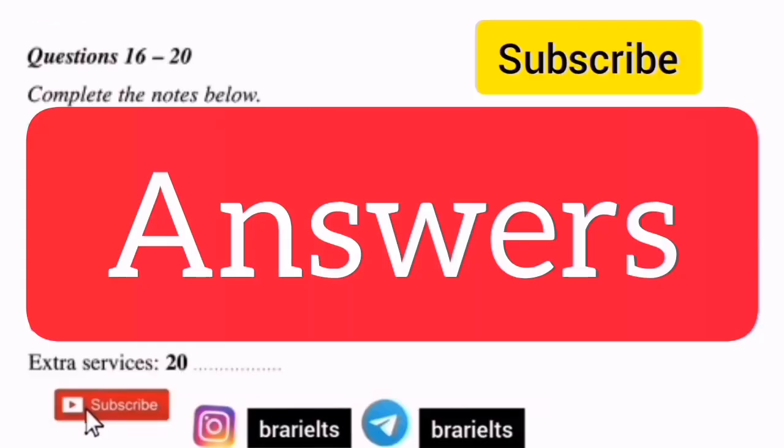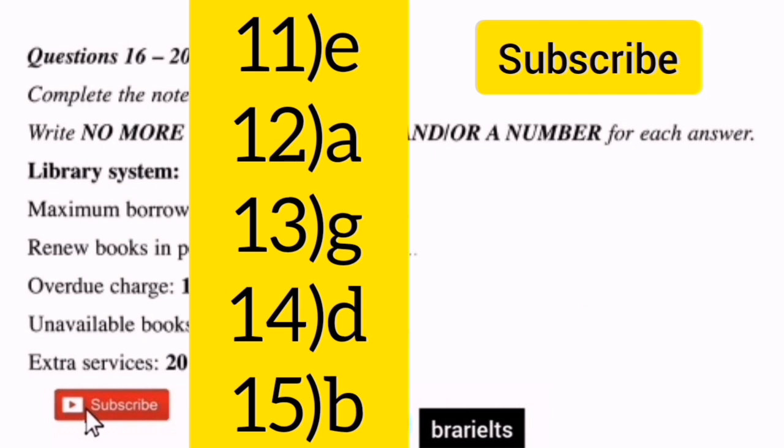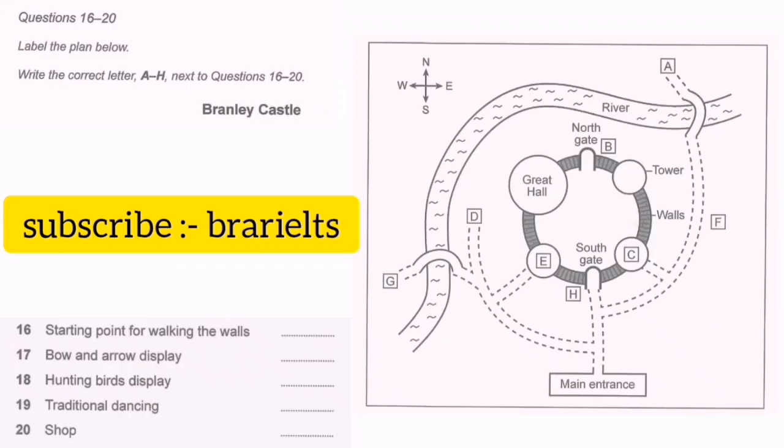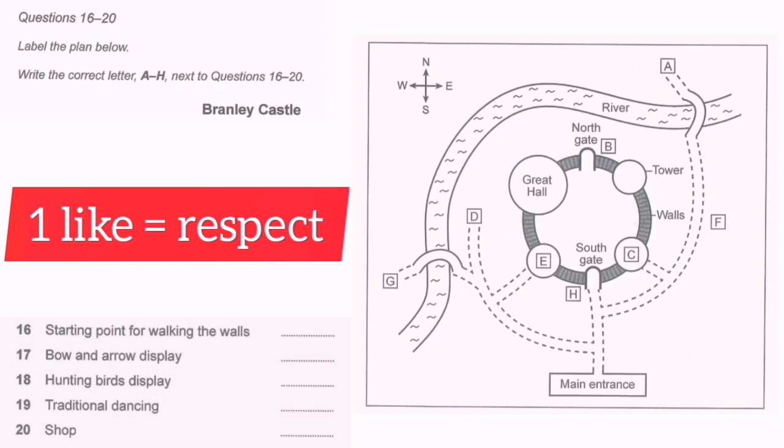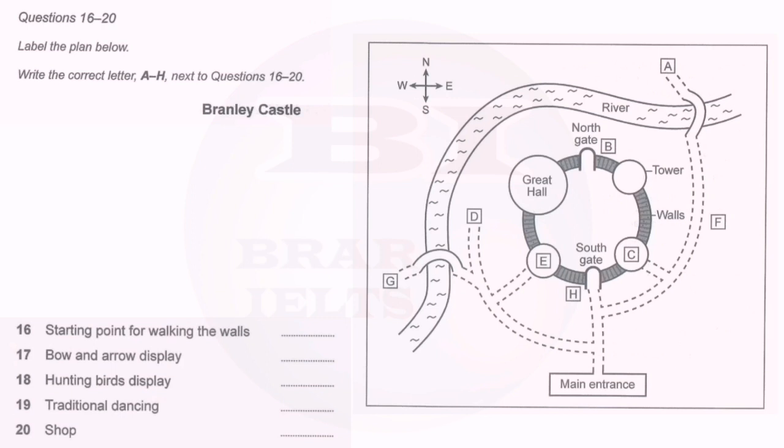You now have 30 seconds to read questions 16 to 20. Now, if you can take a look at your plans, you'll see Branley Castle has four towers, joined together by a high wall, with the river on two sides. Don't miss seeing the Great Hall. That's near the river in the main tower, the biggest one, which was extended and redesigned in the 18th century.